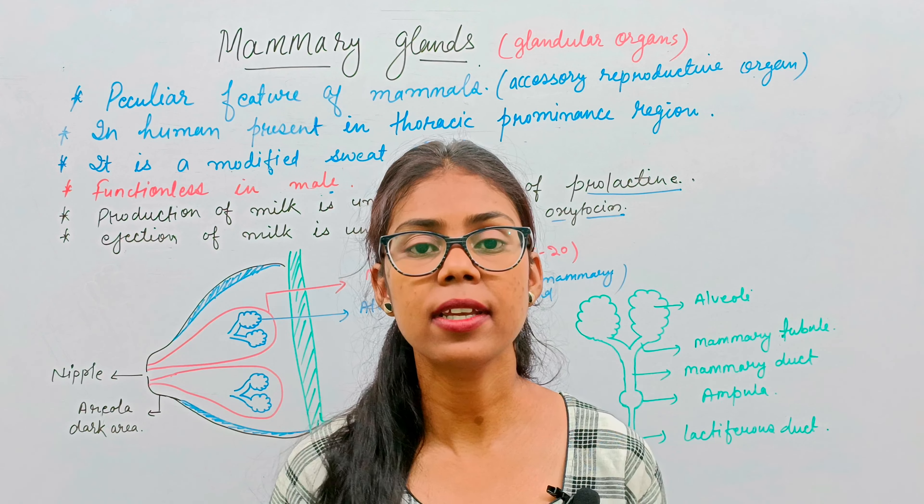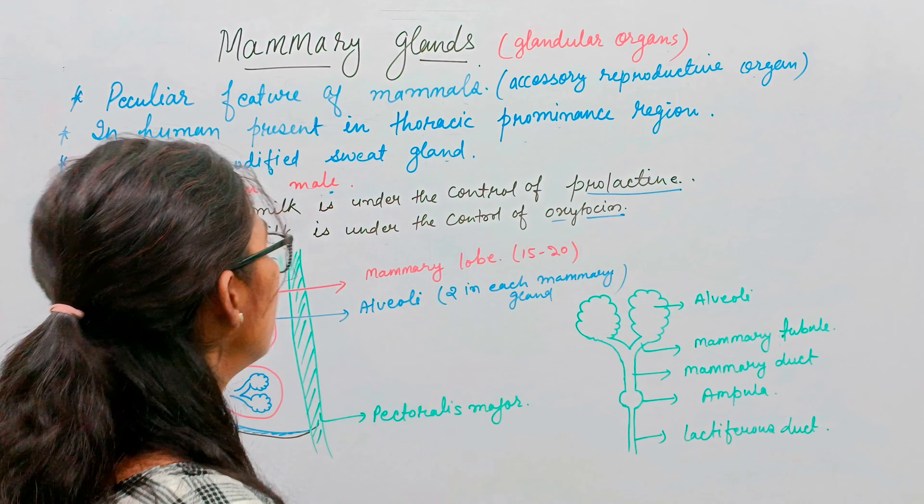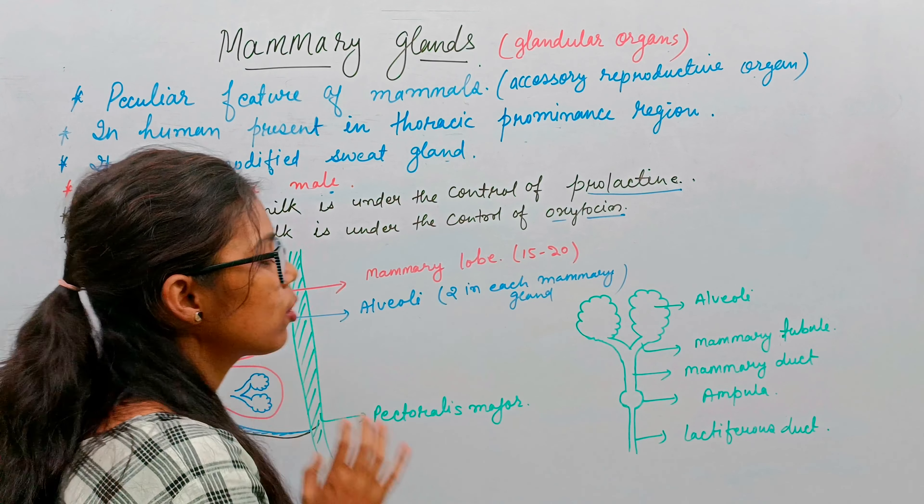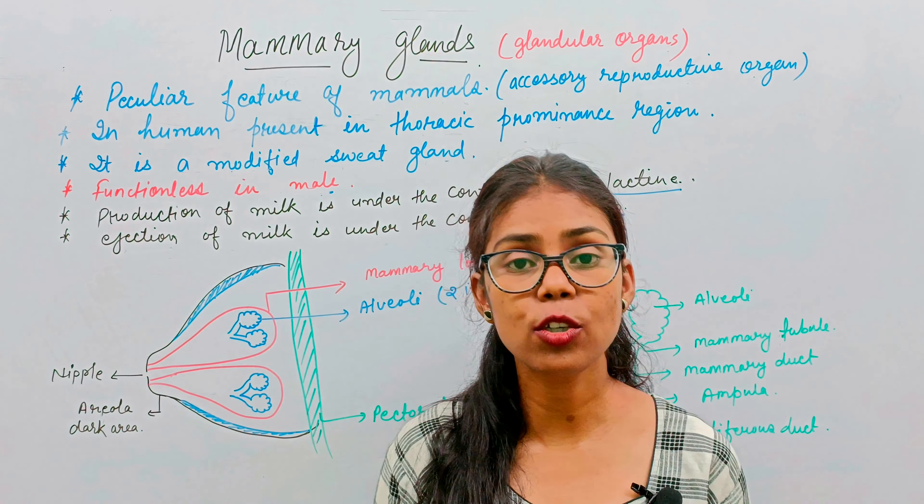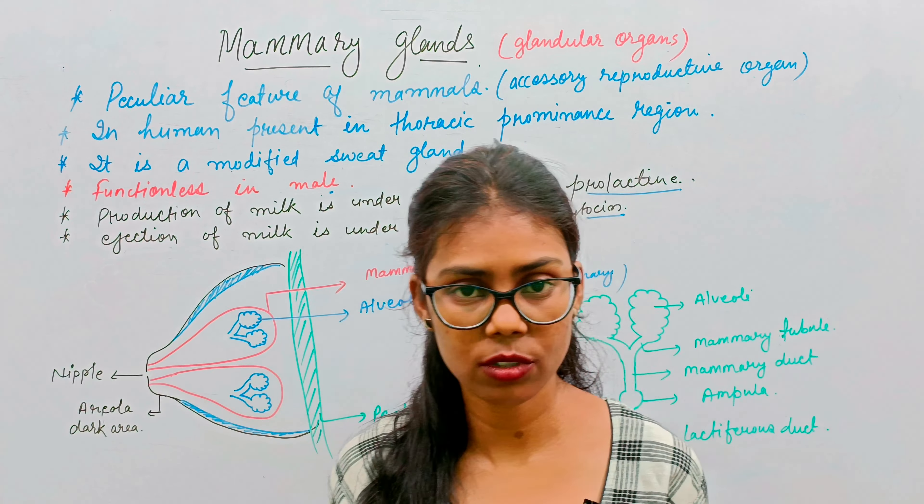Mammary glands are glandular organs because they act like a gland. They secrete milk, that's why it is known as a glandular organ. These mammary glands are a peculiar feature of mammals. When we study the animal kingdom and classifications, every organism and every phylum have different features.